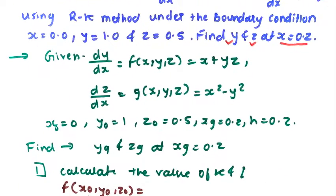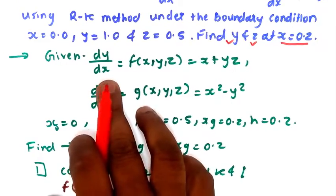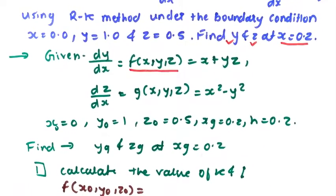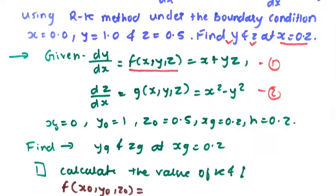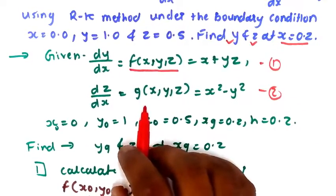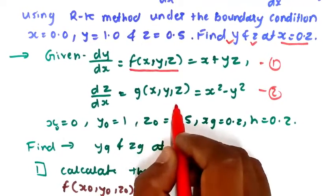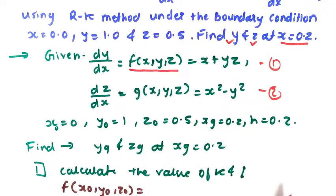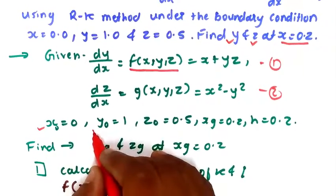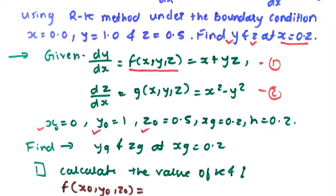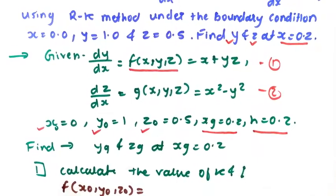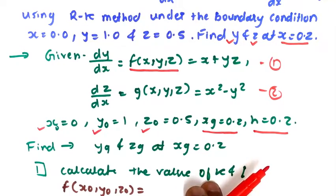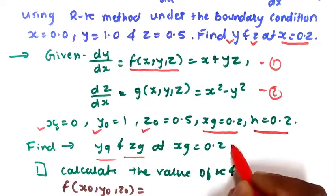The given conditions are: the first equation dy/dx is considered as a function f(x, y, z) = x + yz. The second equation dz/dx is given notation g(x, y, z) = x² - y². Initial values are x₀ = 0, y₀ = 1, z₀ = 0.5, and the target value xg = 0.2. The step size h = 0.2.